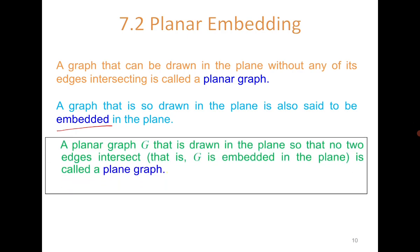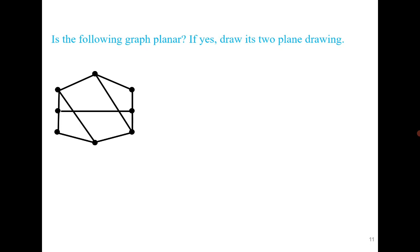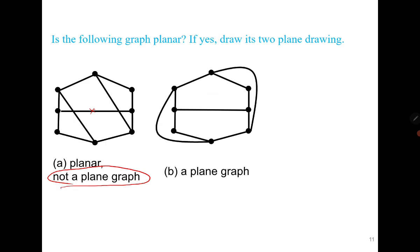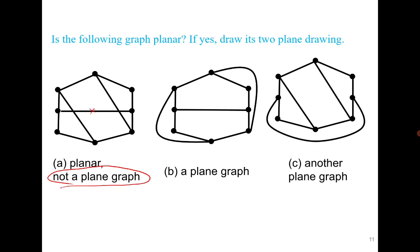A planar graph that is drawn in the plane without edge crossing is called a plane graph. Consider the following graph: is it planar, or is it a plane graph? The graph is planar because you can draw it without edge crossing, but the given drawing is not a plane graph — this is an important distinction. You can take one edge outside, giving two planar embeddings.